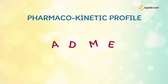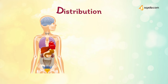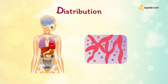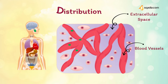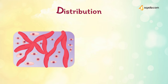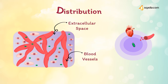Next is distribution. Once drugs have reached the circulation, they reversibly leave the bloodstream and enter the interstitium, extracellular fluid, and tissues. The distribution of a drug from the plasma to the interstitium depends on cardiac output and local blood flow, capillary permeability, the tissue volume, the degree of binding of the drug to plasma and tissue proteins, and the relative lipophilicity of the drug.